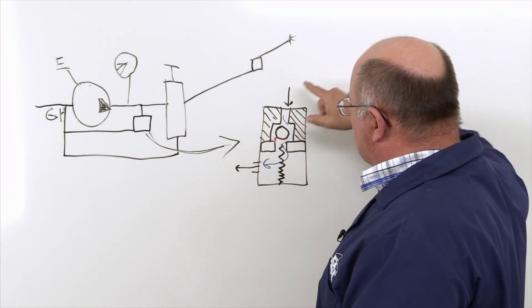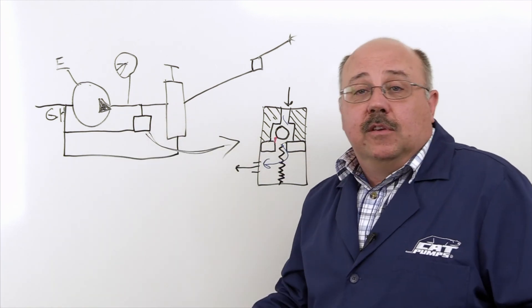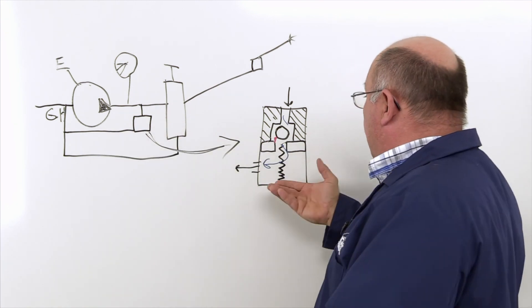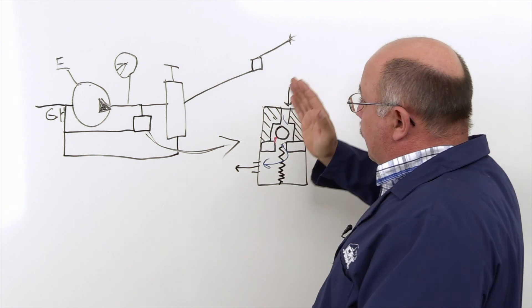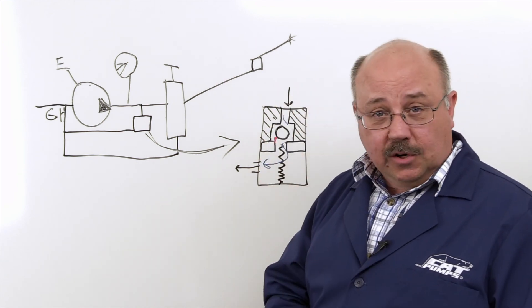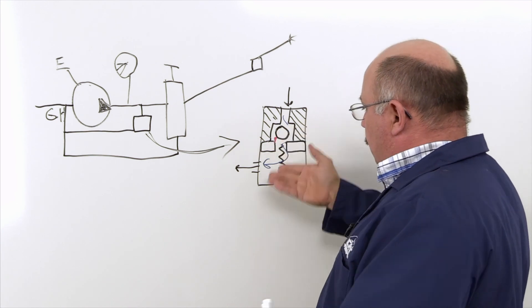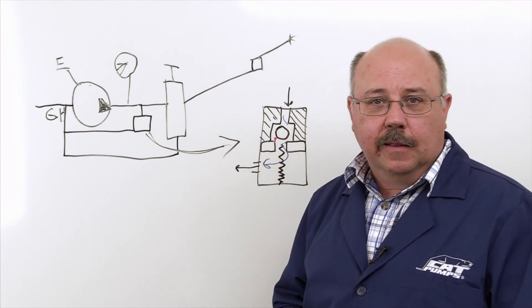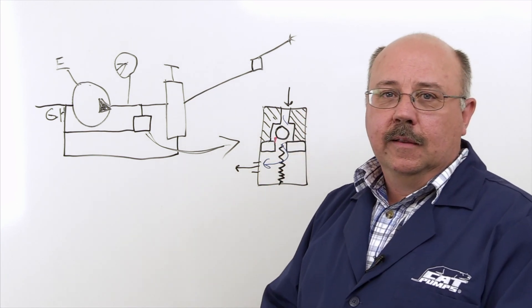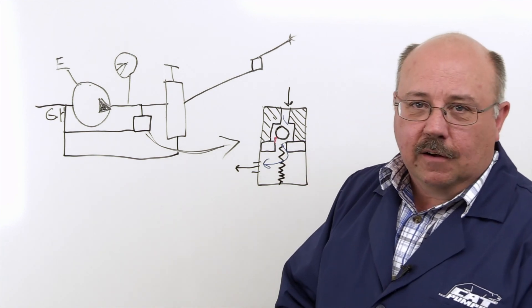So then what happens, there's a continuous path back to inlet, and you can't build pressure. The way to fix that is simply identify that your pressure washer has a quick start valve or easy start valve, and just simply take it apart and clean it out, and then it should be good to go again. And that's the function of an easy start valve.